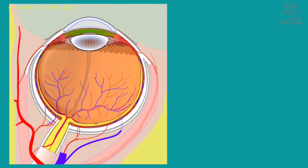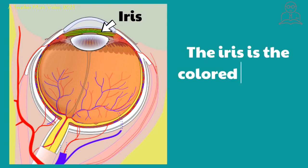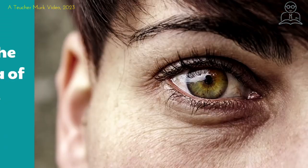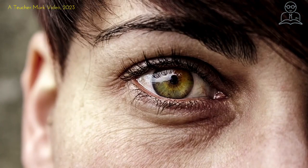The first part of your eye that we are going to learn about is called the iris. The iris is the colored part of your eye. If you look at someone, the colored part of their eye is called the iris.